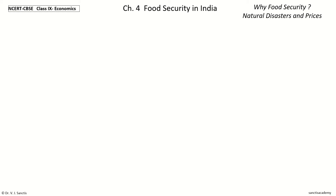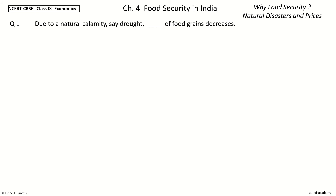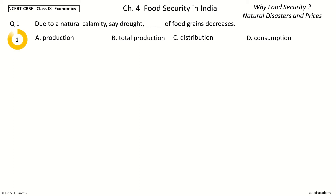This comprises 12 questions. Question 1: Due to a natural calamity, say drought, dash of food grains decreases. The options are: production, total production, distribution, consumption. And the answer is total production. So, due to a natural calamity, say drought, total production of food grains decreases.